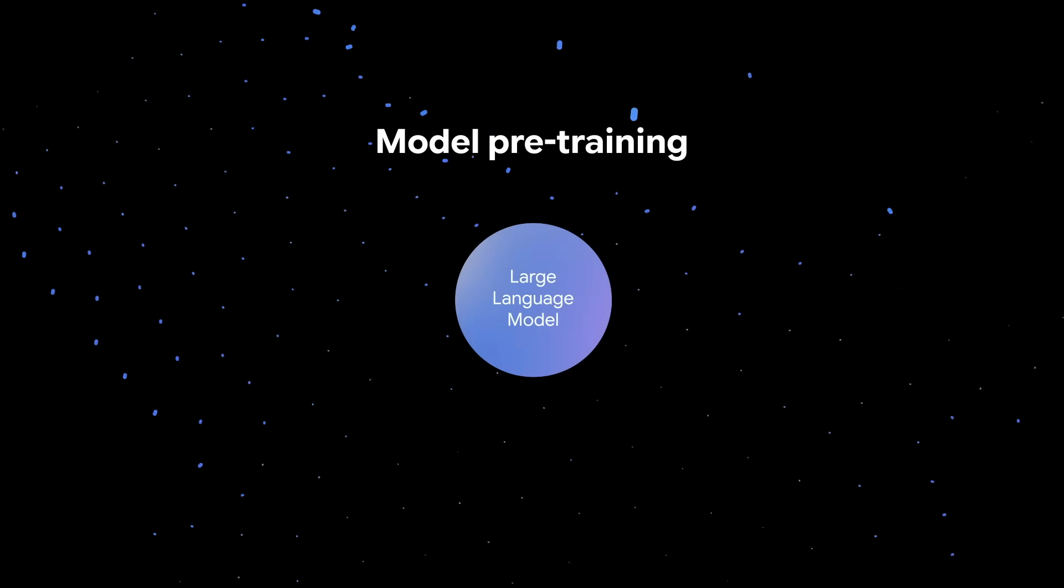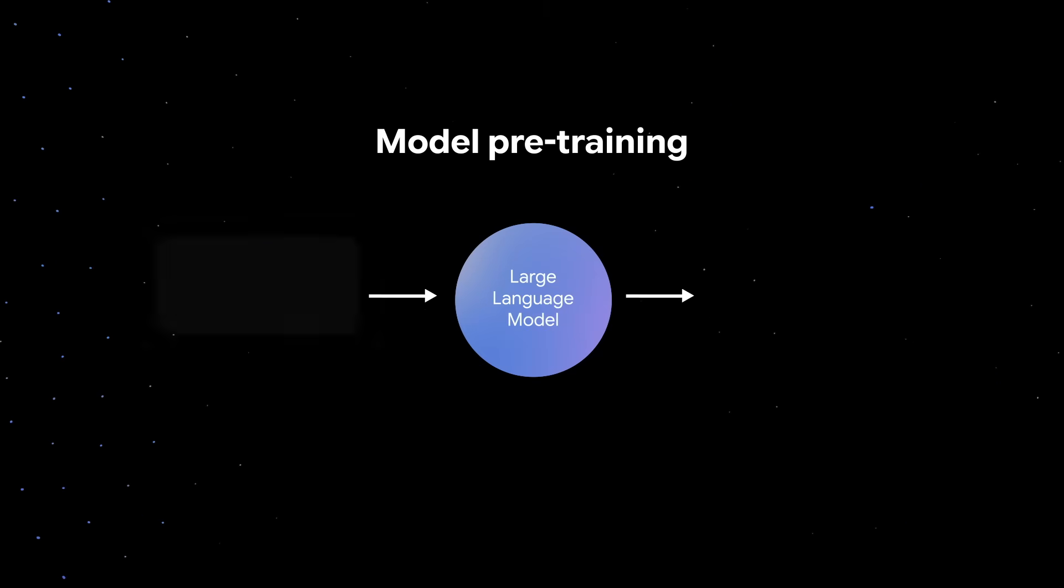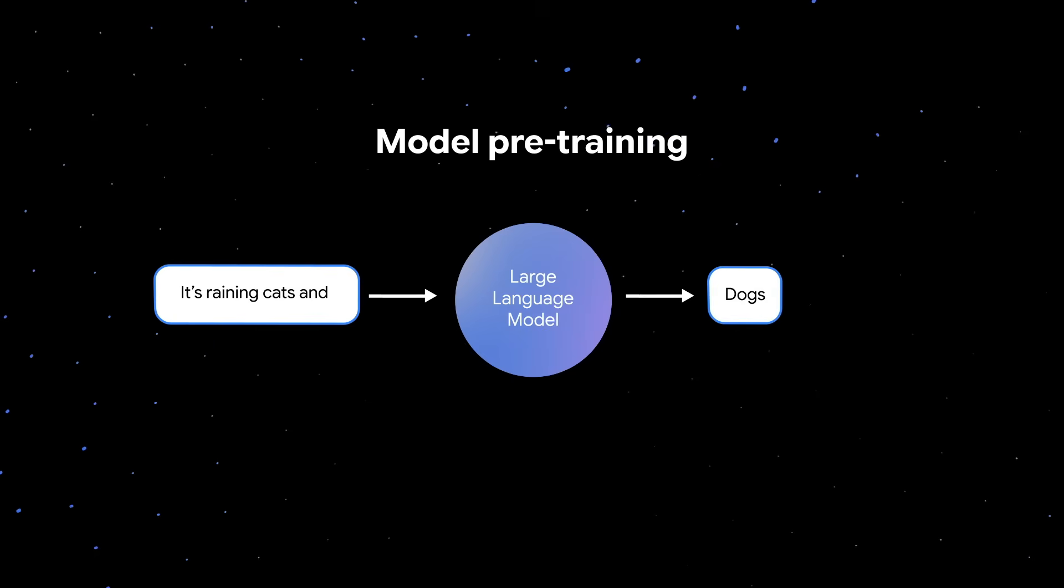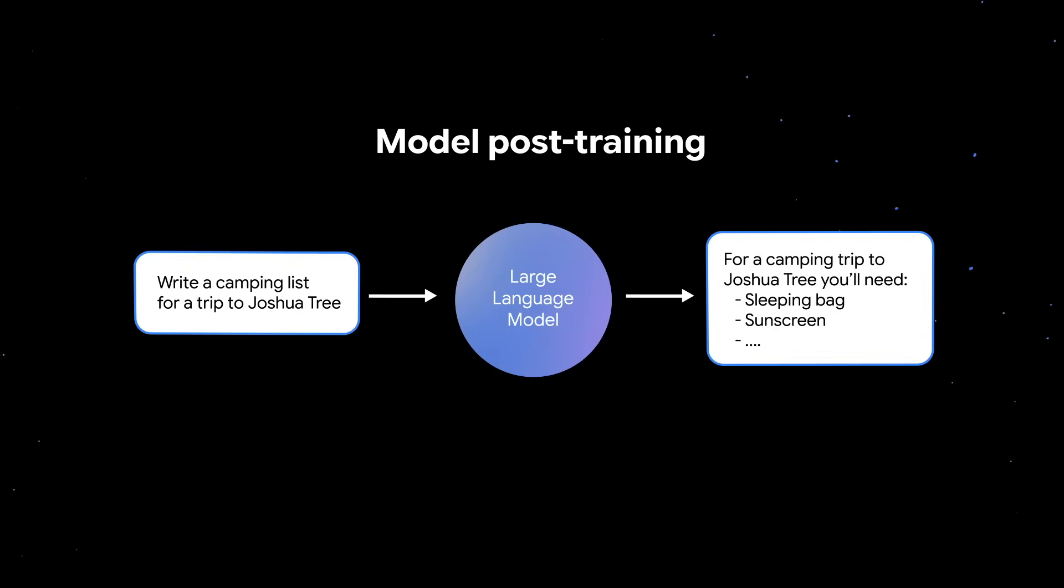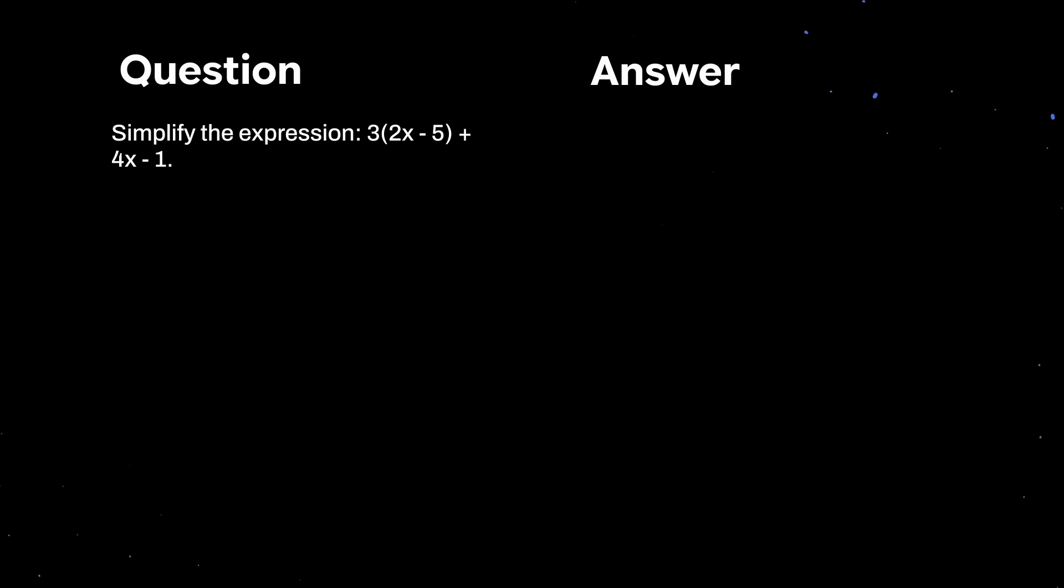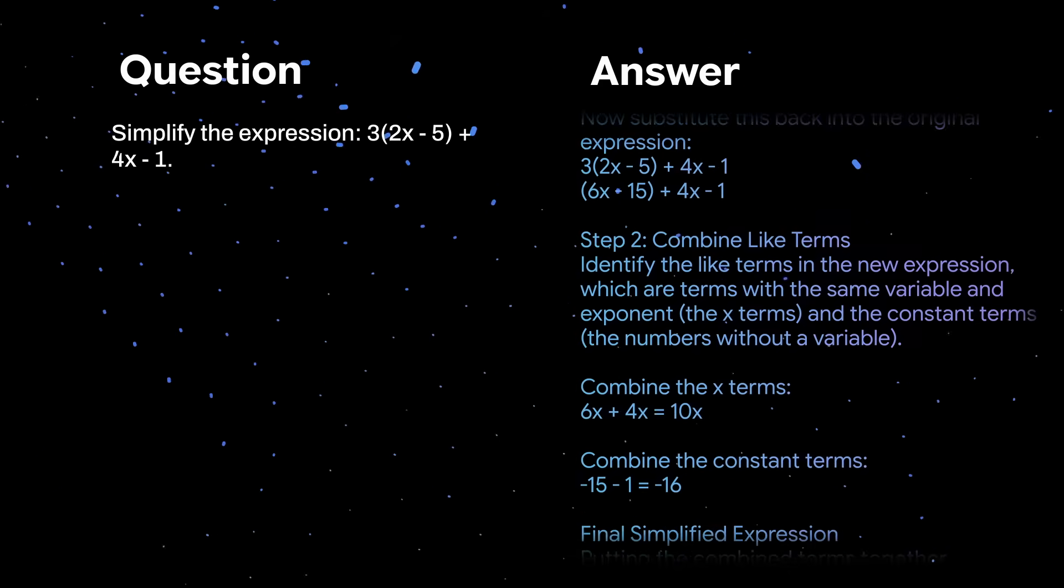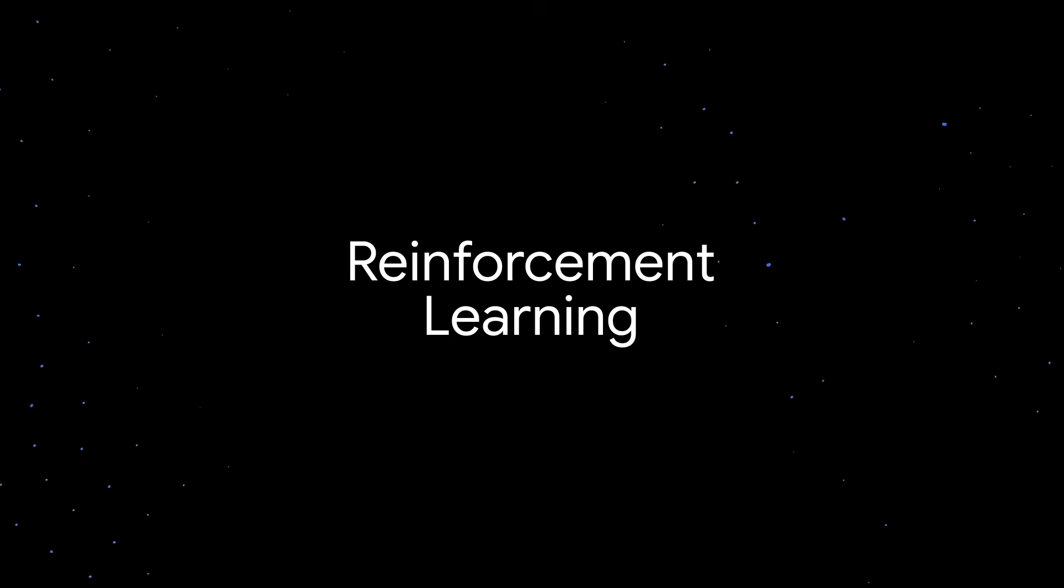That is where reinforcement learning comes in. We can actually teach models to be better at producing long chains of thought during model post-training. As a reminder, during model pre-training, we generally train LLMs to do next token prediction on massive amounts of text. This initial training phase equips the model with a broad understanding of patterns, features, and relationships within the data. During model post-training, we further improve quality and adapt the model to more specialized tasks, like making them respond as helpful assistance or being better at using tools. When it comes to post-training models to be good at thinking, you might use supervised fine-tuning to train the model on input-output pairs where the input is a complicated math or coding problem and the output is a chain of thought that leads to the correct answer. But using reinforcement learning is what really unlocked improvements in LLM thinking and reasoning capabilities.